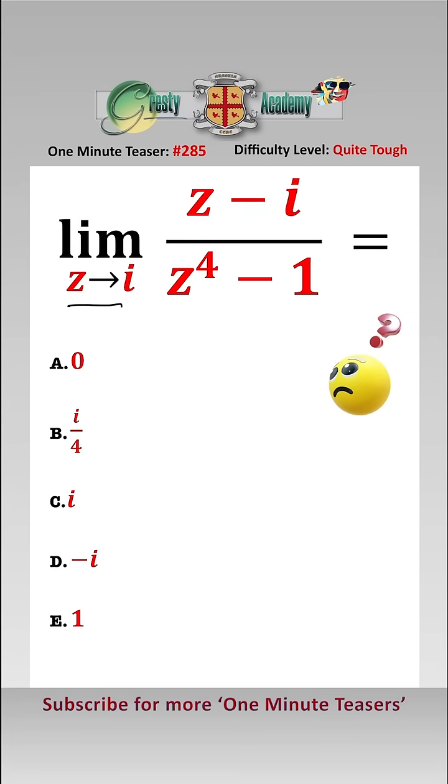Putting z equals i into our expression, we get i minus i over i to the 4 minus 1. As i to the 4 is 1, that equals 0 over 0, which is indeterminate and in a form that we can use L'Hopital.